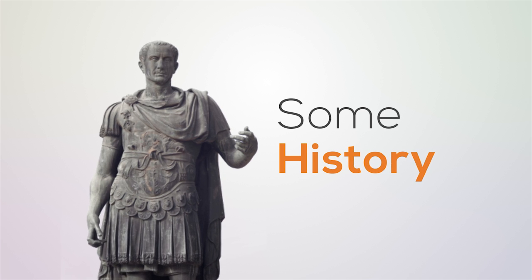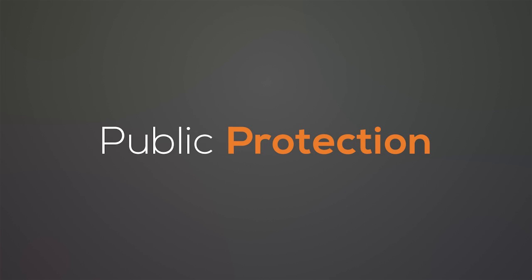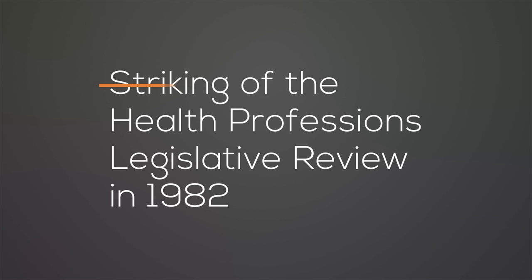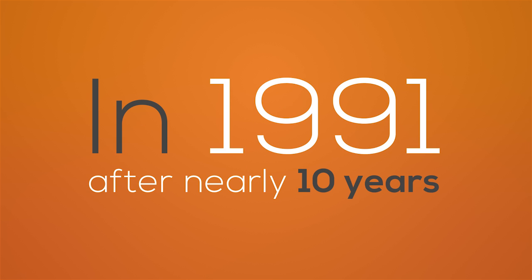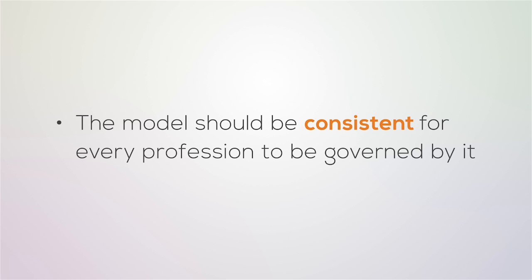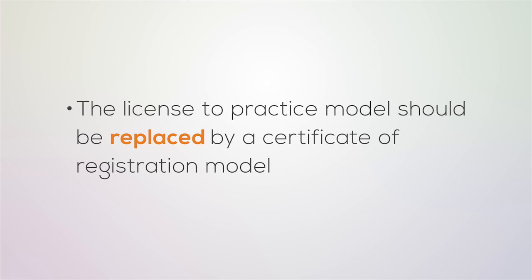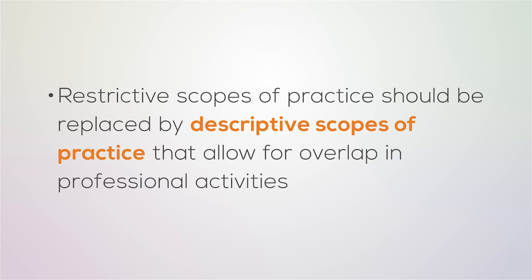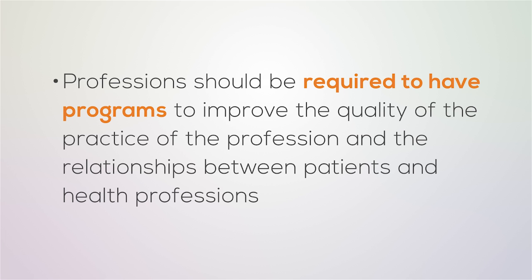Before the Regulated Health Professions Act existed, the legislation governing health professions was a patchwork of statutes and regulations with an inconsistent approach to public protection. This situation was addressed by the striking of the Health Professions Legislative Review in 1982. In 1991, after nearly 10 years, the review issued recommendations for a new model of health regulation in Ontario. The recommendations included: the model should be consistent for every profession; the License to Practice Model should be replaced by a Certificate of Registration Model; and restrictive scopes of practice should be replaced by descriptive scopes of practice that allow for overlap in professional activities. Professions should also be required to have programs to improve the quality of practice and the relationships between patients and health professions.